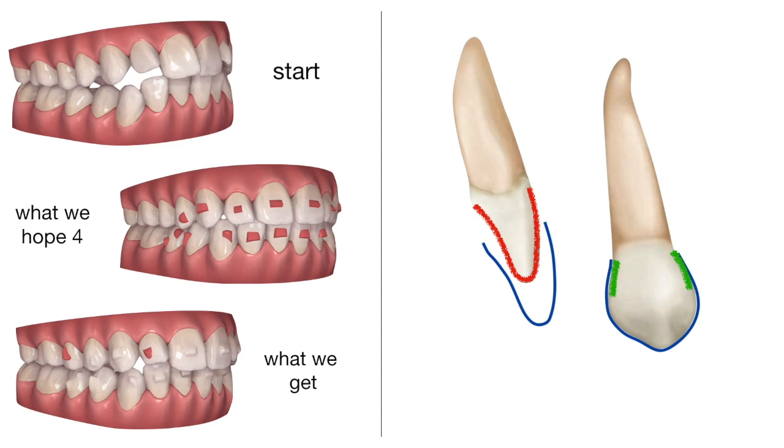If the aligner has no surface to push onto, it won't move the tooth and it will just slowly detach from it, causing a space to form between the tooth and the aligner.